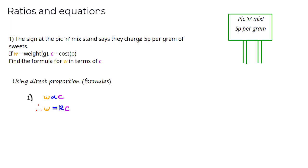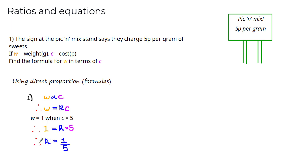Reading the question, we're told they charge 5p per gram. In terms of w and c, we interpret this as w = 1 when c = 5. Substituting these values gives 1 = k × 5, so dividing both sides by 5 gives k = 1/5. Substituting back, the general formula is w = (1/5) × c.